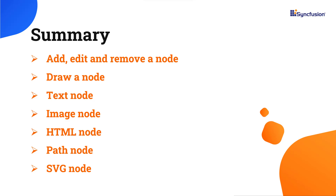In this video, I have shown you how to create a node in the code behind, at runtime, and draw a node using the drawing tool. You also saw how to edit and remove nodes from the diagram canvas. Lastly, you saw the different node shapes. You can download a working example from the GitHub link in the description. I've also included a link to check if you're eligible for our community license, which provides a free license key to use our products. If you found this video useful, give it a like and subscribe to our channel.